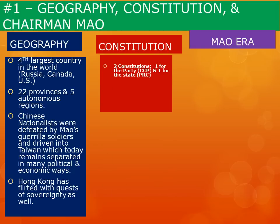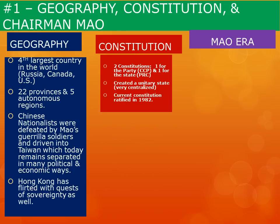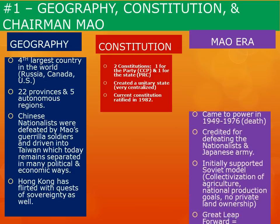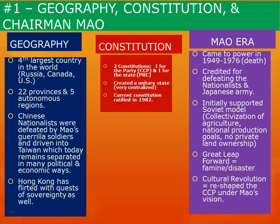The constitution of China actually has two constitutions: one that organizes the Communist Party and another that organizes the state itself. China is designed to be a very unitary state in its constitutional structure, meaning it's very centralized, and its current constitution was ratified in 1982.